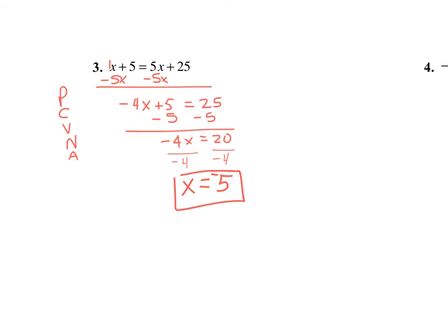Now try to do this one by yourself. I asked myself if I had parentheses — I don't. Can I combine? I can't combine 1x and 5, and I can't combine 5x and 25. Are all my variables on the left-hand side? No — I had to subtract 5x from both sides, and I ended up with negative 4x plus 5 equals 25. How do I get rid of that positive 5? I subtract 5, my 5s cancel, and I'm left with negative 4x equals 20. I divide by negative 4, so x equals negative 5. That's your final answer.